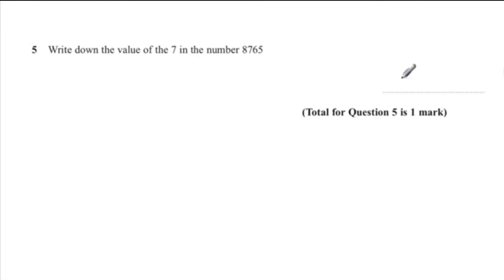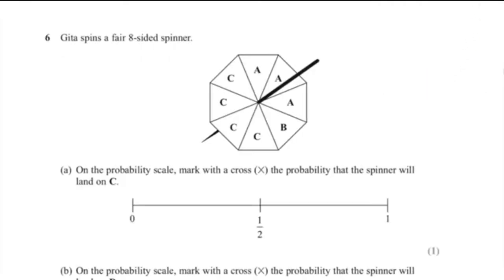Question 5: write down the value of the 7 in the number 8765. The answer is 700. Question 6: Gita spins a fair eight-sided spinner. On the probability scale, mark with a cross the probability that the spinner will land on C. Half the spinner consists of the letter C, so the answer is one half.